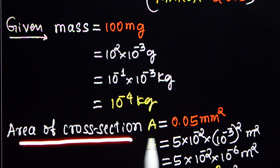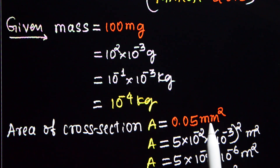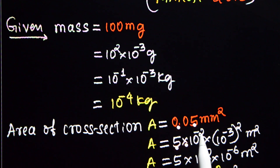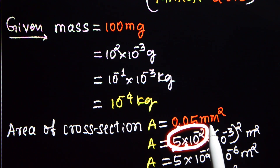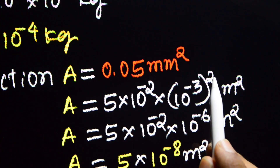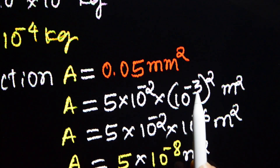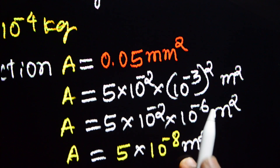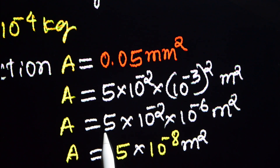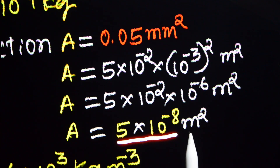The cross section area is given as 0.05 mm². We need to write it in terms of meter square. Write 0.05 as 5 × 10 raised to minus 2. Since mm means 10 raised to minus 3, mm² is 10 raised to minus 6. So the area becomes 5 × 10 raised to minus 2 × 10 raised to minus 6, giving the cross section area of the drawn wire as 5 × 10 raised to minus 8 meter square.